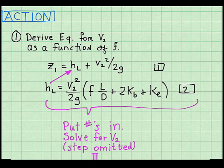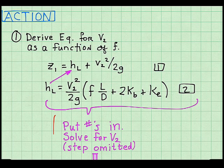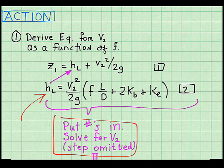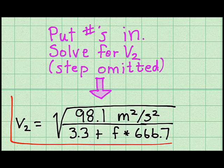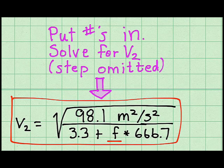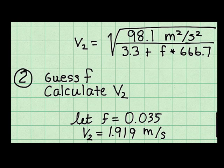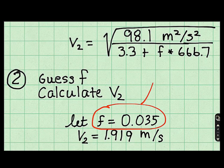To implement successive substitution, I begin by deriving an equation for velocity at section 2 as a function of the friction factor. I write the energy equation, substitute in the combined head loss equation, put numbers in, and solve for V2. The resulting equation gives V2 as a function of the friction factor, with everything else known. I then guess the friction factor as 0.035, substitute it in, and calculate V2 = 1.919 meters per second.